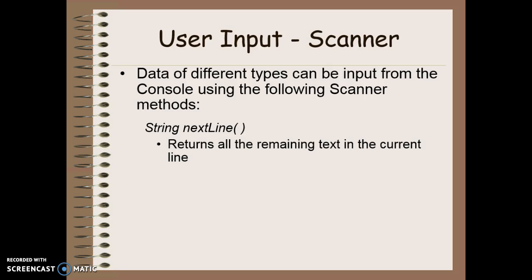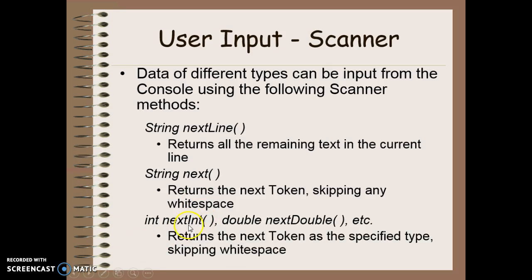Now there are a number of different methods that we can use with the scanner in order to actually access the data. The first one is called next line. What this is going to do is return all the remaining text in the current line before they press the enter key and return it as a string. The next method will return the next token skipping over any whitespace. And then you have a variety of methods that will return the next token as a specific type of data depending on the method given. So next int will return an integer value, next double will return a double value, and so on through the different primitive data types.